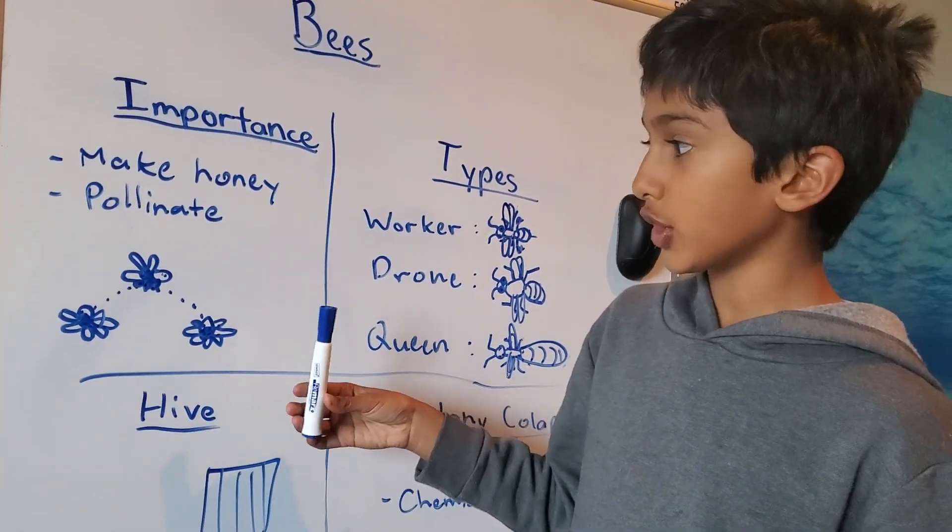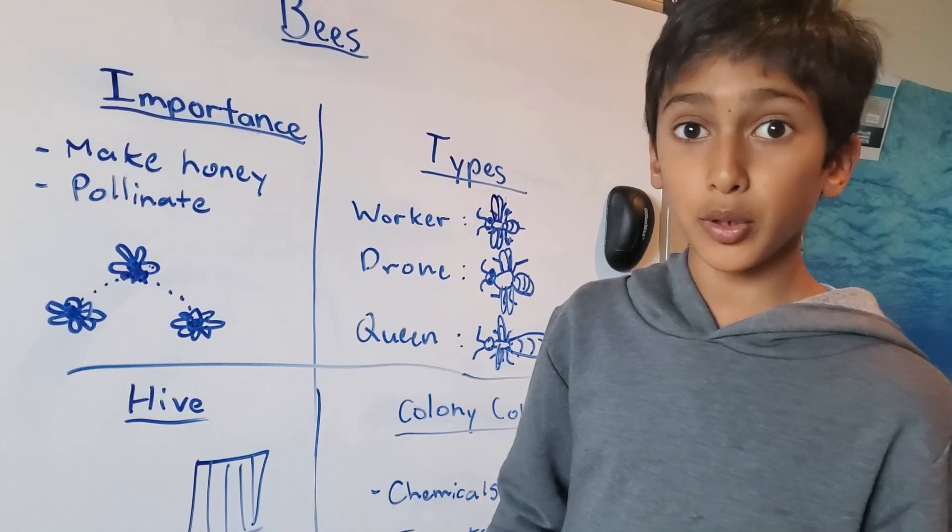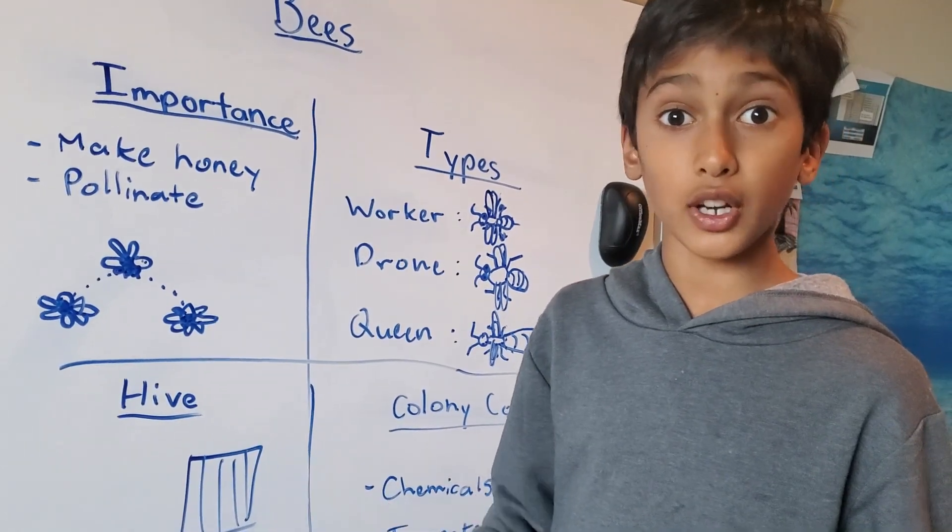Without pollination, we won't get food like apples, oranges, broccoli, even nuts like almonds.